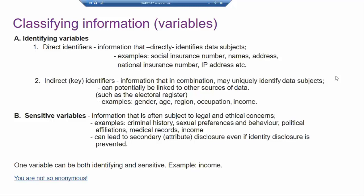For direct identifiers, this is information that directly identifies data subjects — what we usually think of as personal data. Examples include social insurance number, name, address, national insurance number, IP address, and NHS number. Then we have indirect identifiers — information that still refers to individuals but is not specific to those individuals. Examples include gender, age, geography, occupation, and income. This is data that put together can potentially be linked to other sources such as the electoral register, leading to identification.